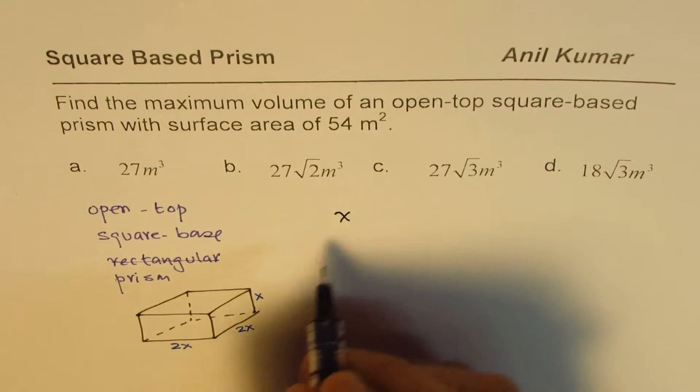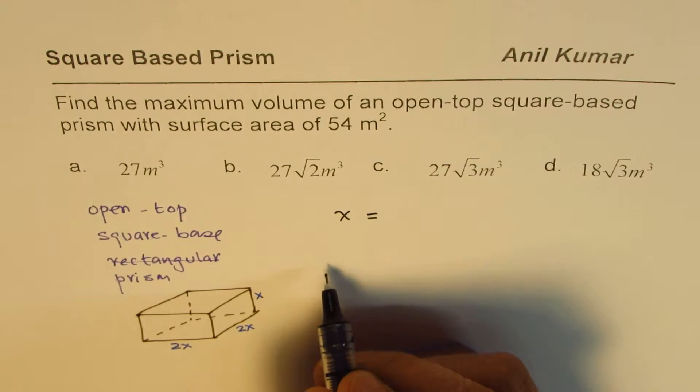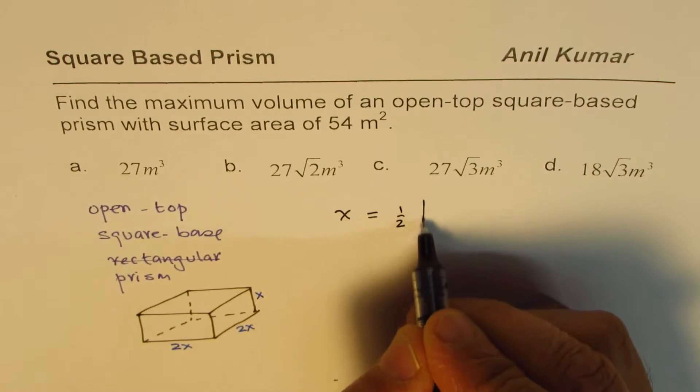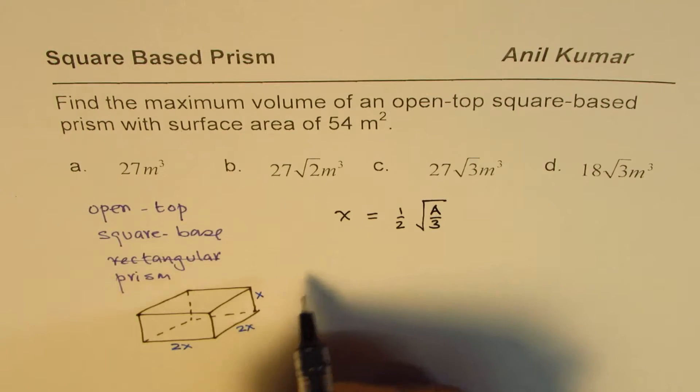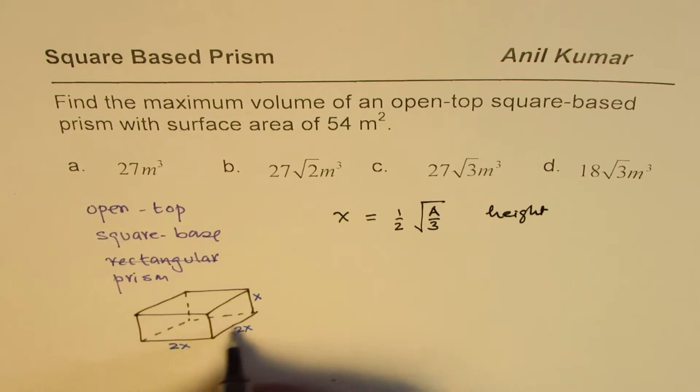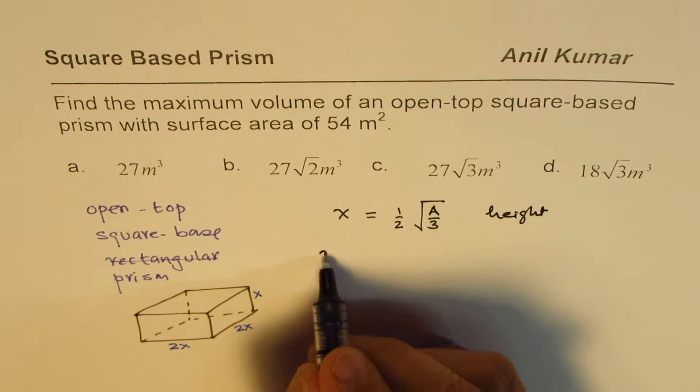So the height, this x, the height in this particular case will be half of square root of area divided by three.